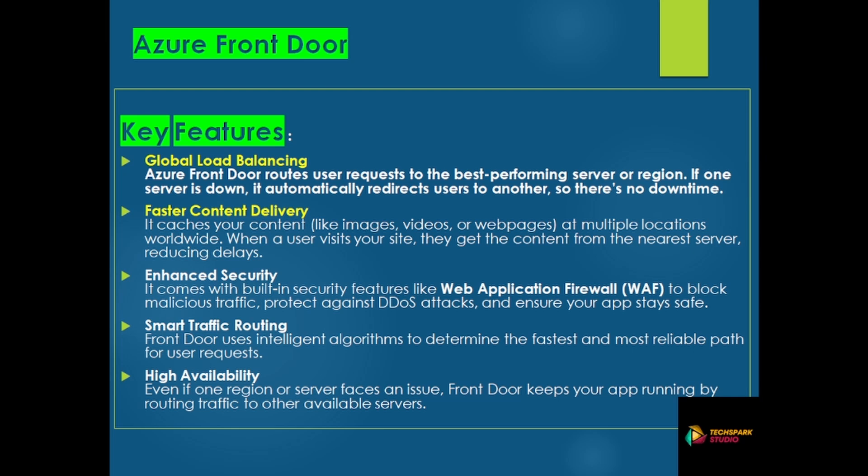Faster content delivery — it caches your content like images, videos, and web pages at multiple locations. When users visit your site, they get content from the nearest server, reducing latency. For security, it comes with built-in security features like a Web Application Firewall to block malicious traffic, protect against DDoS attacks, and ensure your app stays safe.